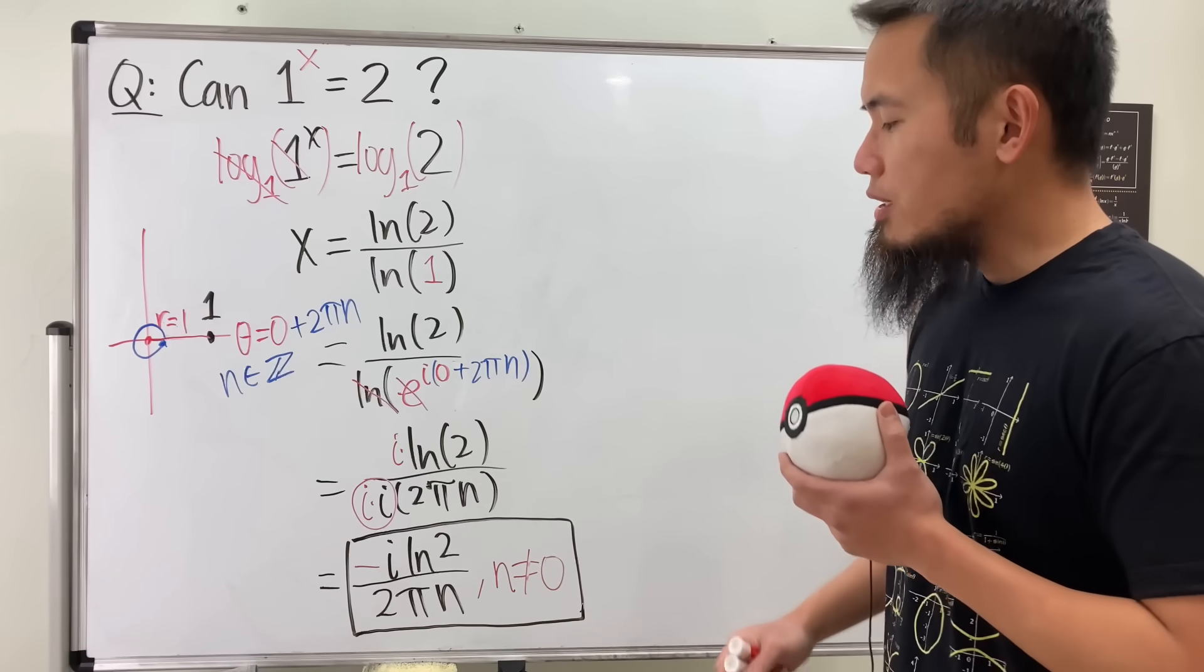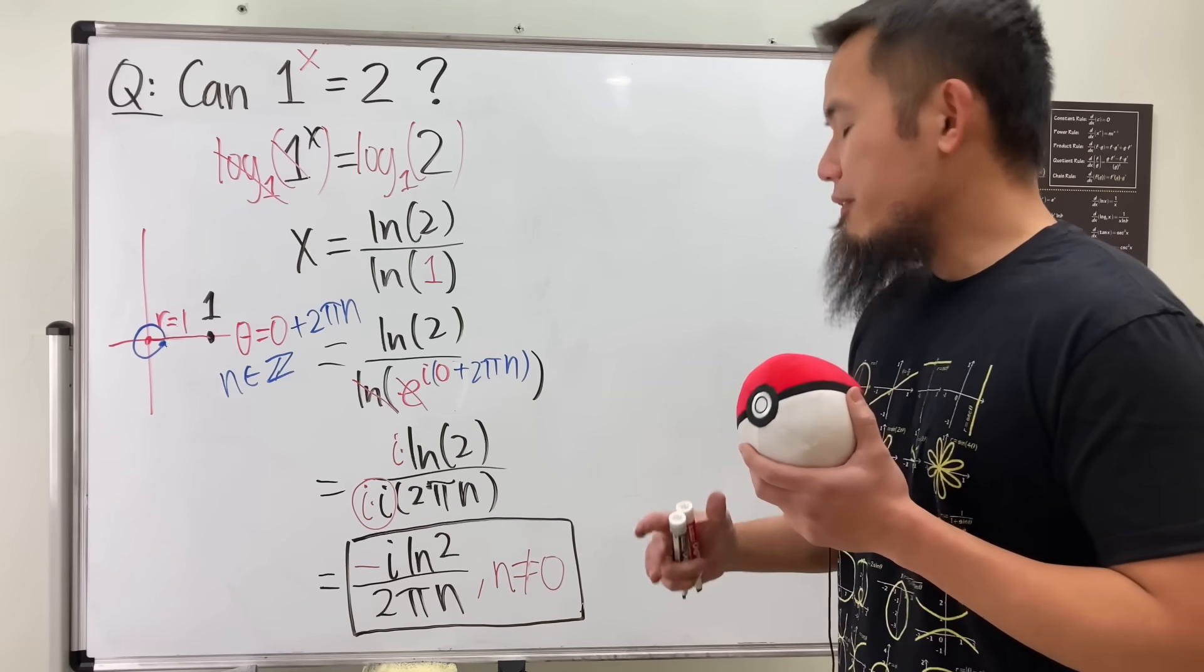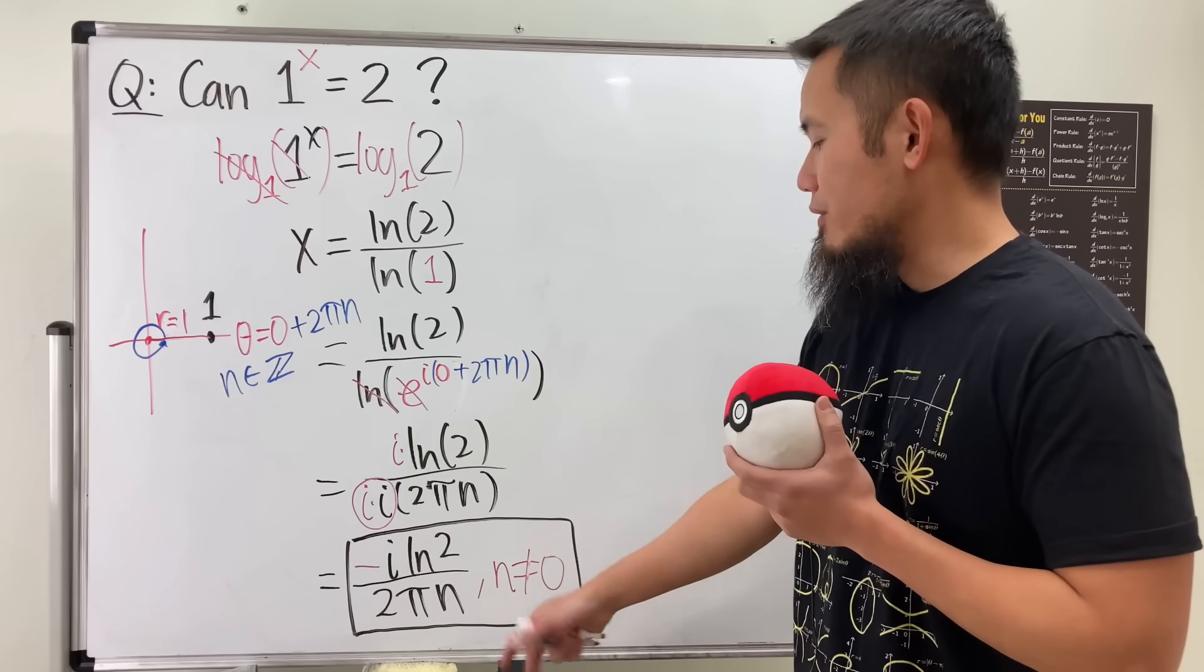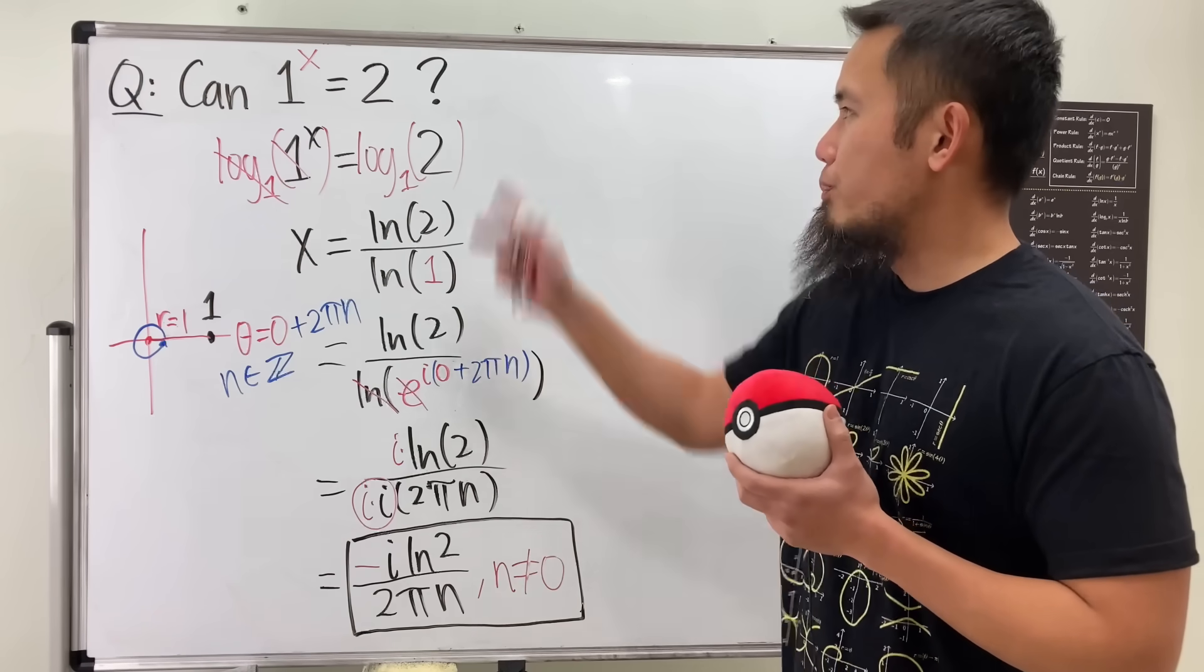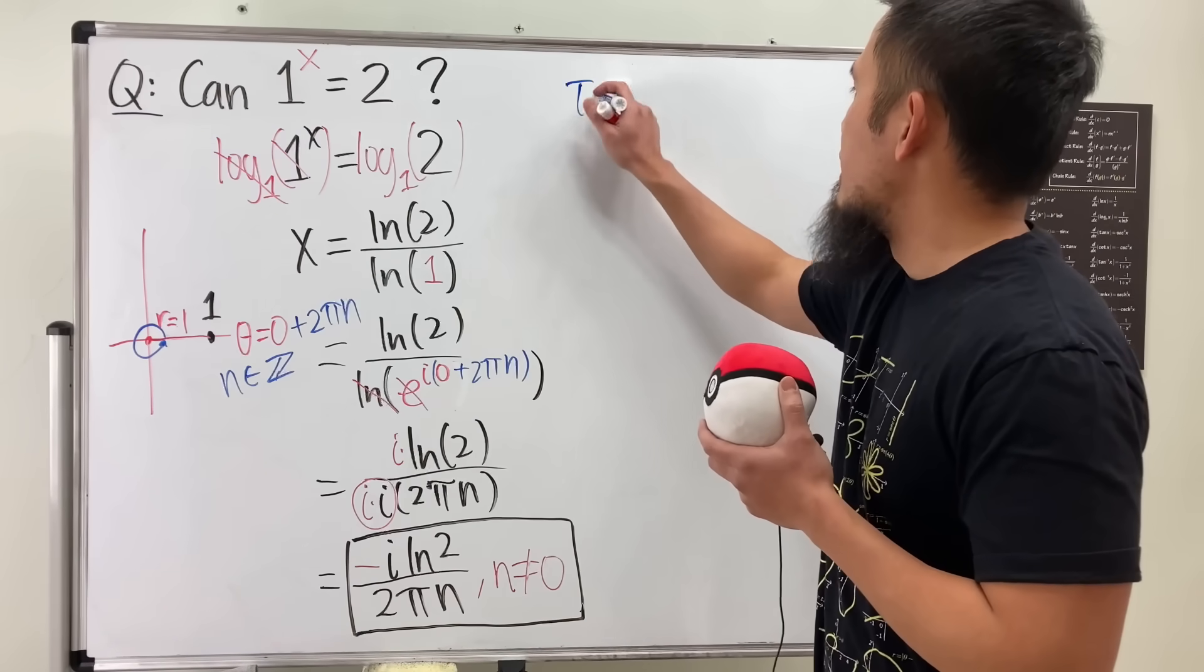Now, how many solutions do we actually have? Well, it's kind of like infinitely many, but every time you put the answer, let's say you choose n to be 1, if you put it back, let me just show you how it looks like.